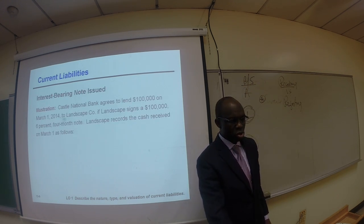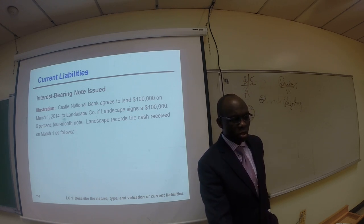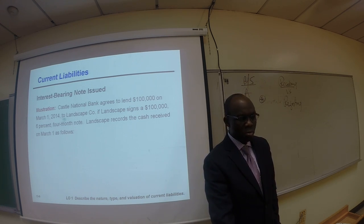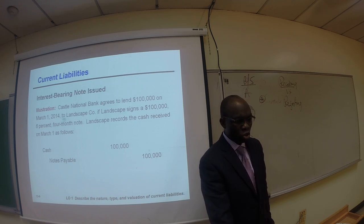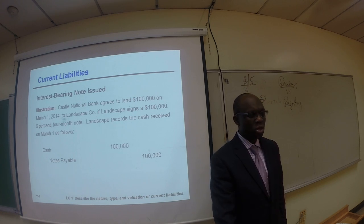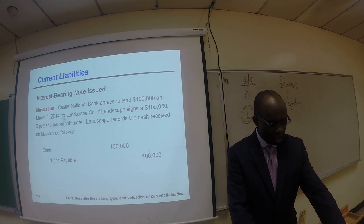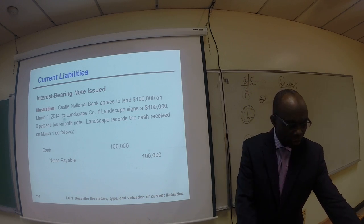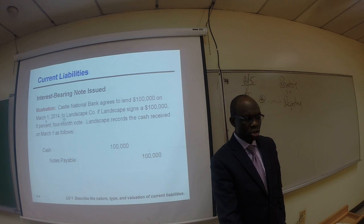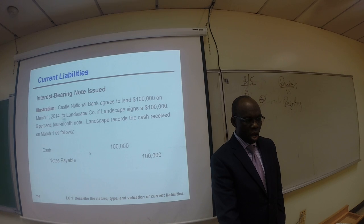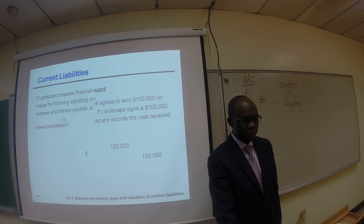The bank agrees to lend $100,000 to this company on March 1st, 2014, and the company records the journal entry as such: cash is debited for $100,000, notes payable is credited for $100,000. The note was issued on March 1st, 2014 — a six percent, four-month note — so this is the journal entry recorded on March 1st.